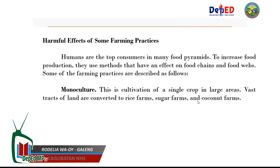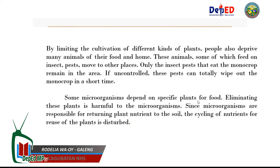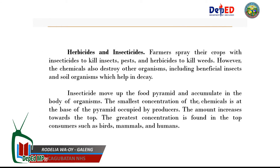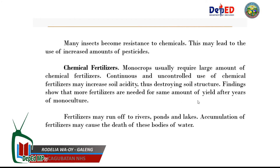Harmful effects of some farming practices: humans are top consumers in many food pyramids. To increase food production, they use methods that have an effect on food chains and food webs. Some of the farming practices described are: monoculture, herbicides and insecticides, and chemical fertilizers. To conserve the environment, some desirable practices are as follows.